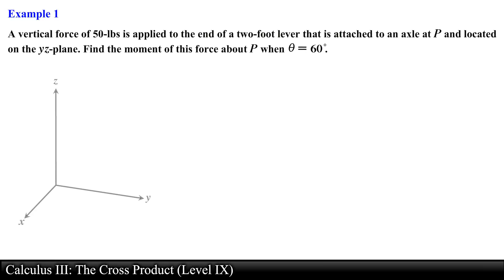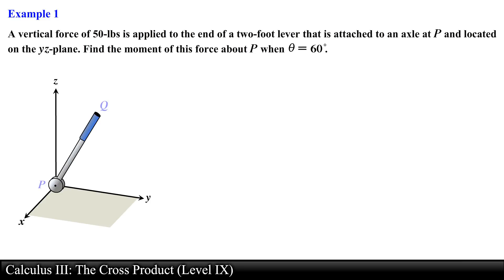A vertical force of 50 pounds is applied to the end of a 2-foot lever that is attached to an axle at point P and located on the YZ plane. Find the moment of this force about point P when theta equals 60 degrees. In this problem we are asked to find the moment of the force F about point P when theta equals 60 degrees.